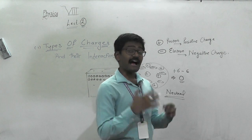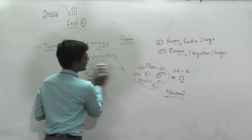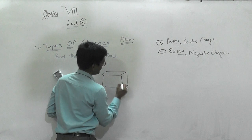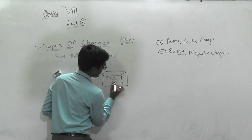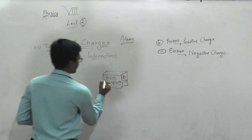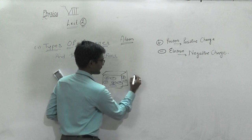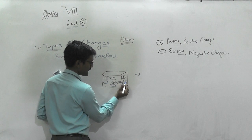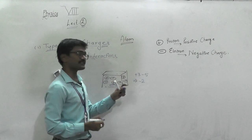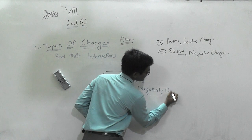But if I happen to add some more electrons upon this material, what would be the situation? If the material initially has equal positive and negative charges, and I add two more electrons — say three positive and five negative — then three minus five equals minus two. So it is not neutral. It is negatively charged.